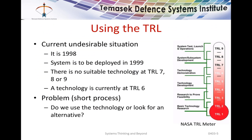How is TRL used? Here's an example. The undesirable situation: assume it's 1998 and we're going to deploy a system in 1999. There's no suitable technology available at TRL 7, 8, or 9 — there is one at TRL level 6. NASA's TRL meter shows a thermometer-style representation. The decision for the program manager or systems engineer is: do we plan to use that technology currently at level 6, or do we look for an alternative?